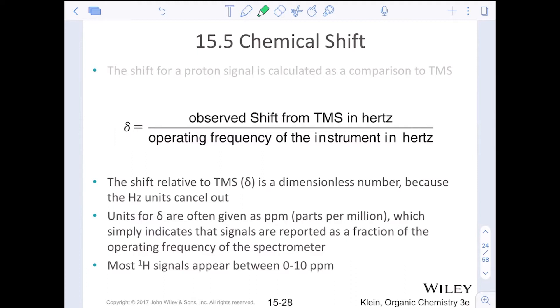Units for delta are often given in ppm, parts per million, which is just the indication of the magnitude there, because the operating frequency is usually much greater than an observed shift in the TMS in terms of the frequency factors. So most proton NMR signals appear between zero and 10 ppm. Sometimes that can even go up to 12 ppm.